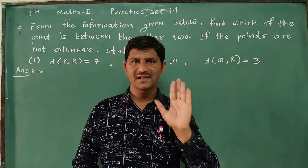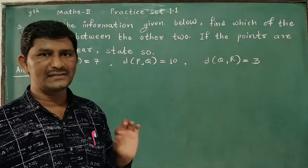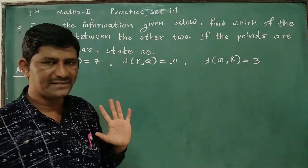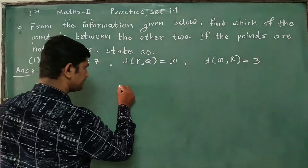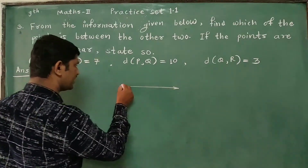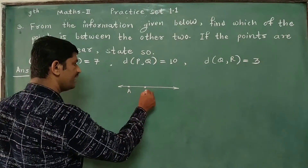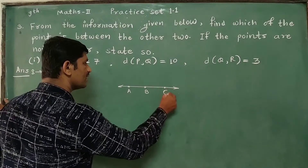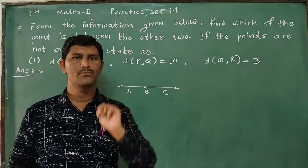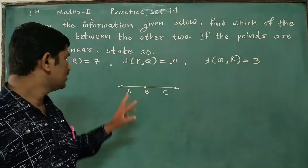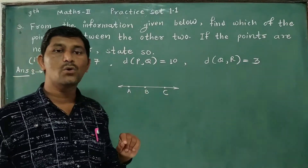What do we need to use to solve this question? It's a little basic. Let's look at the diagram and the points: Point A, Point B, and Point C. Points A, B, C are collinear.